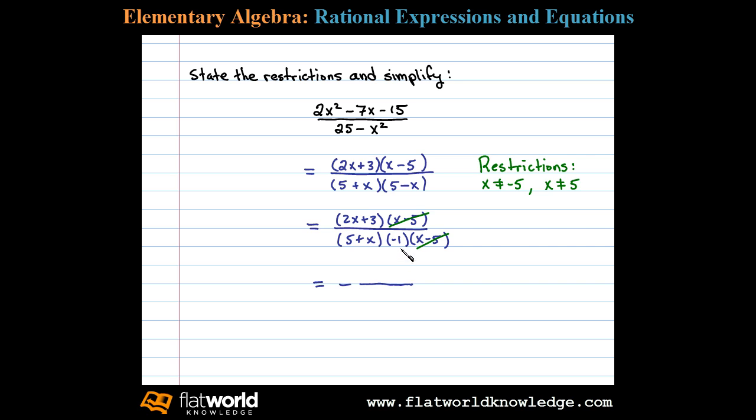Here we write the factor negative 1 in front of the fraction bar, and we're left with 2x+3 in the numerator and 5+x in the denominator. Now that's not what we see in the textbook. In the textbook the denominator is presented as x+5. Remember, addition is commutative, so that's equivalent.